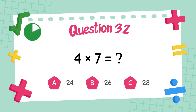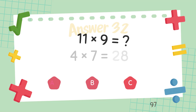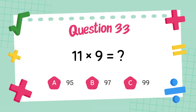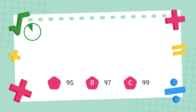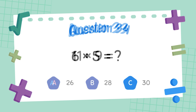What is 4 times 7? What is 11 times 9? The answer is 99.